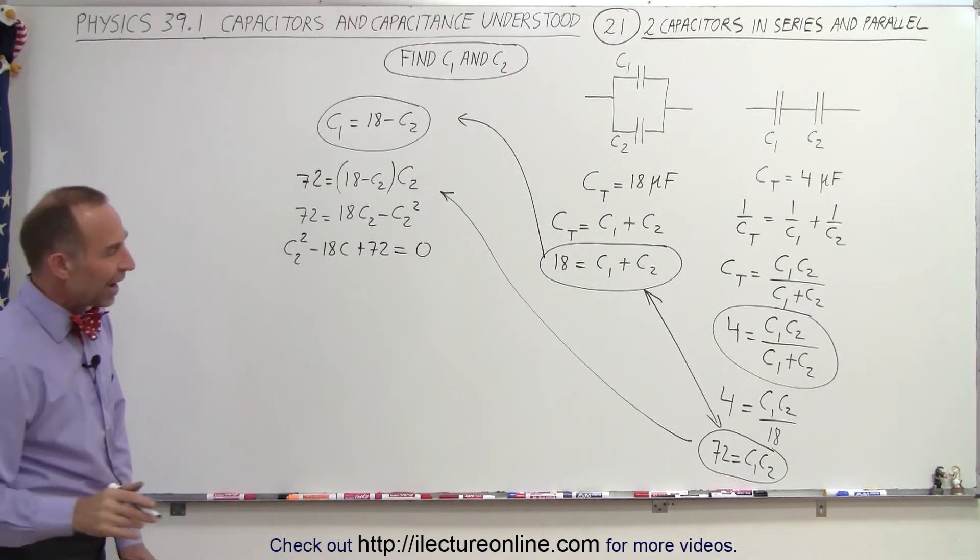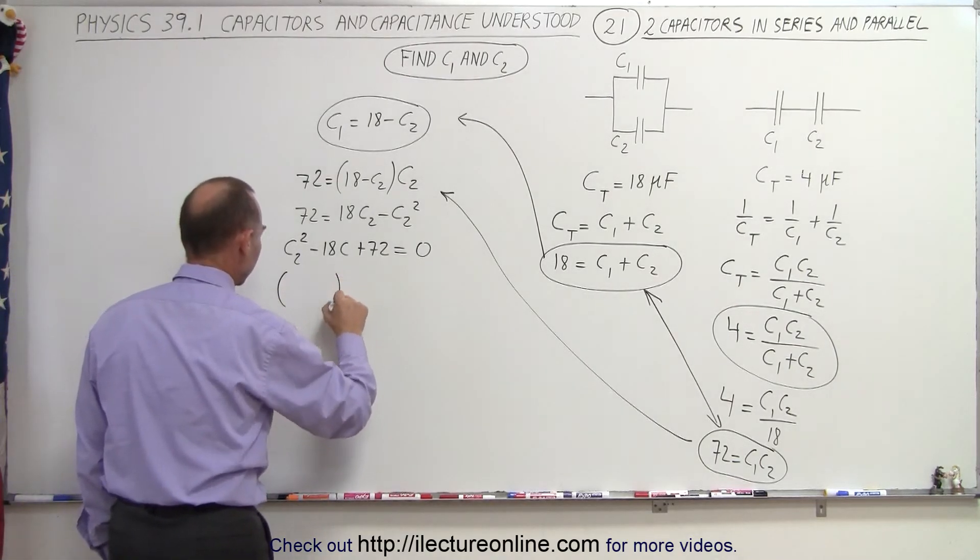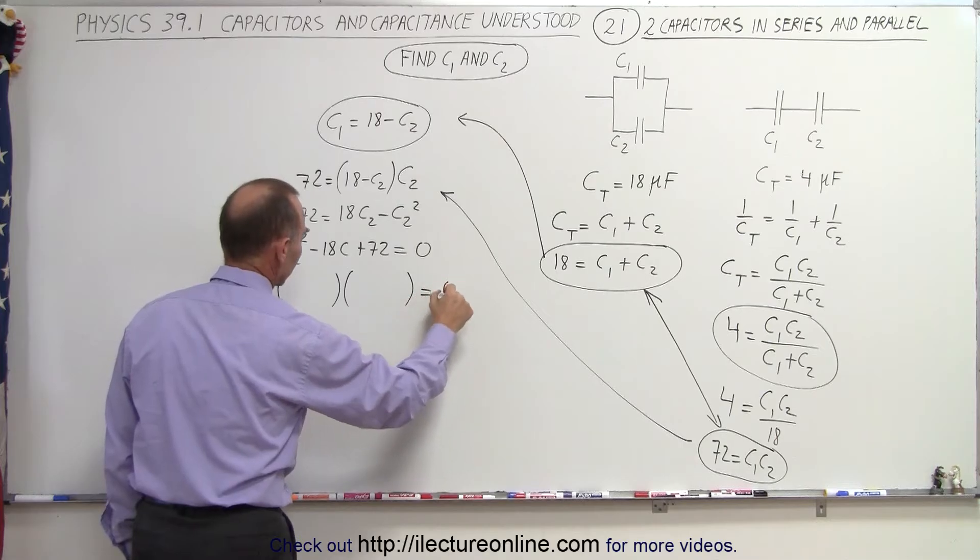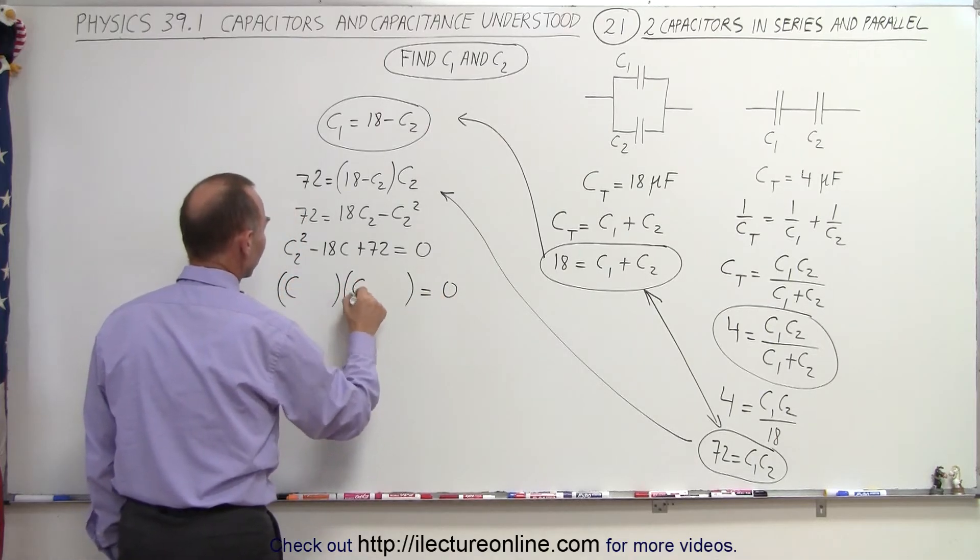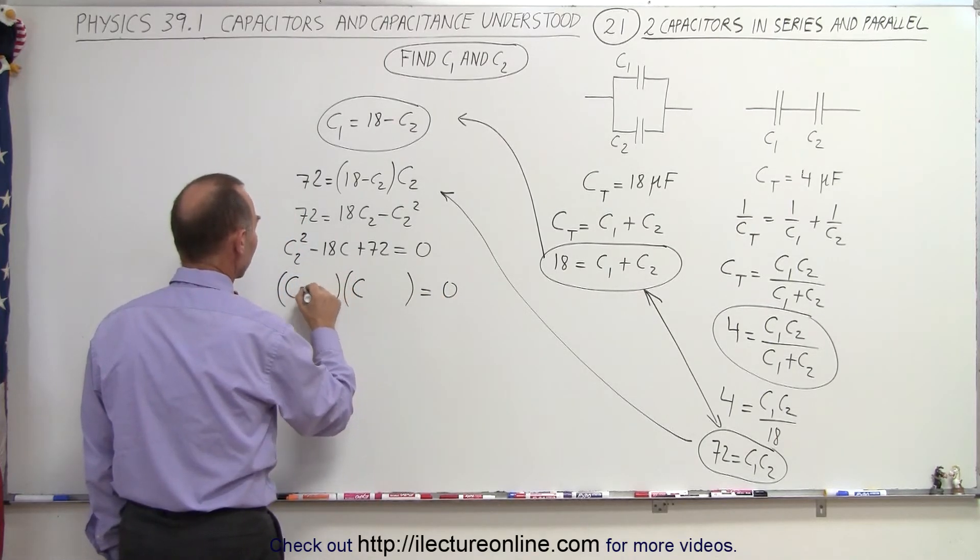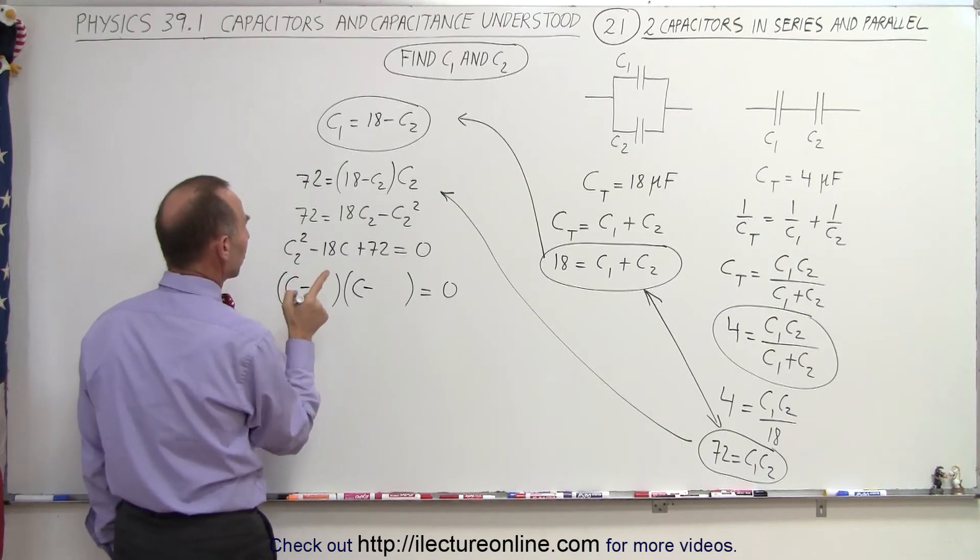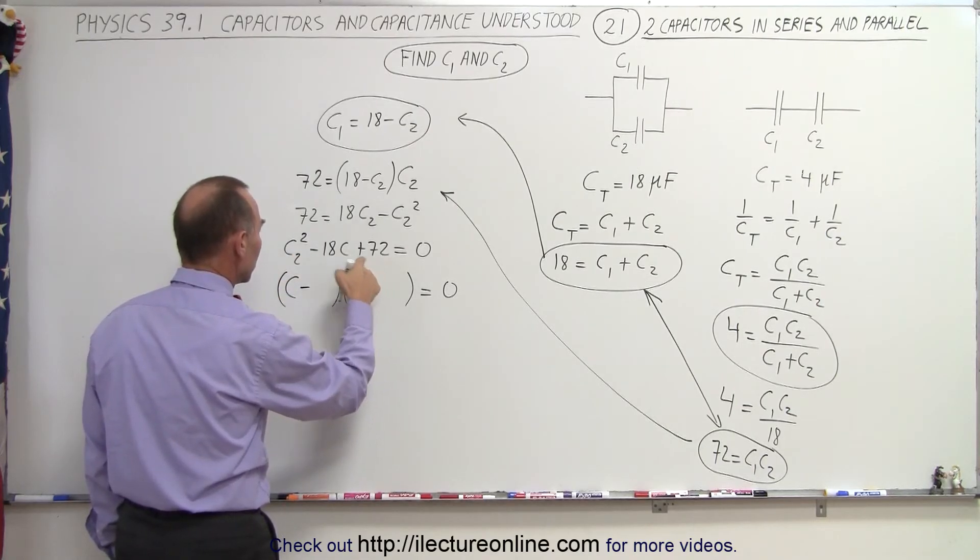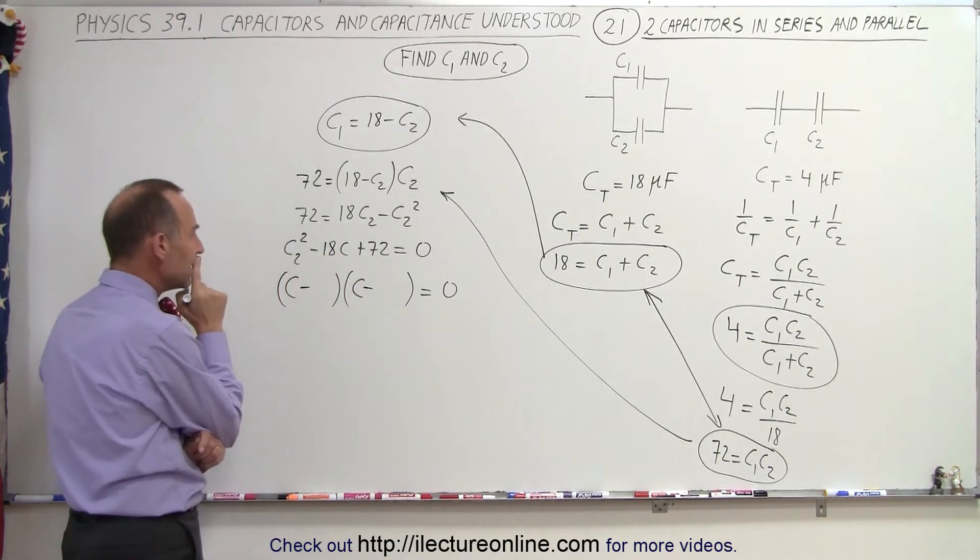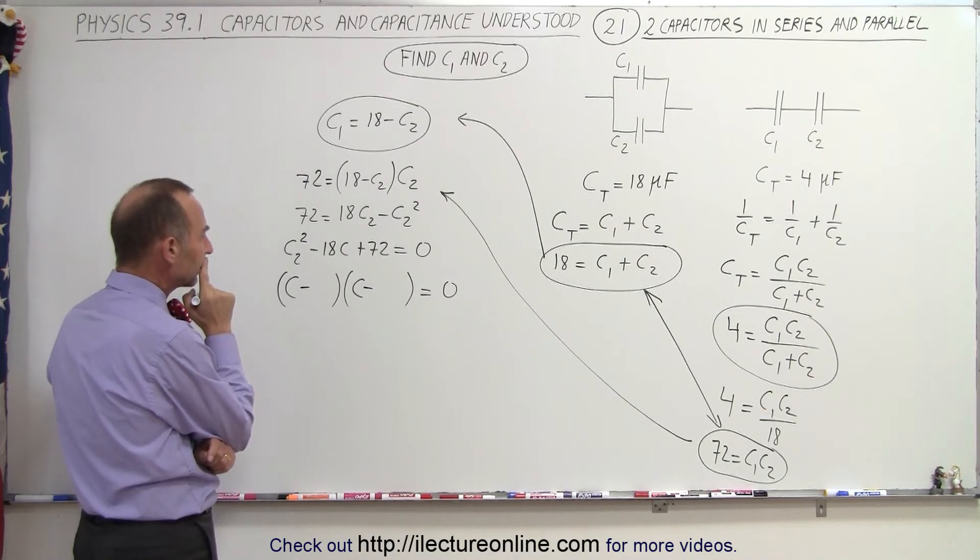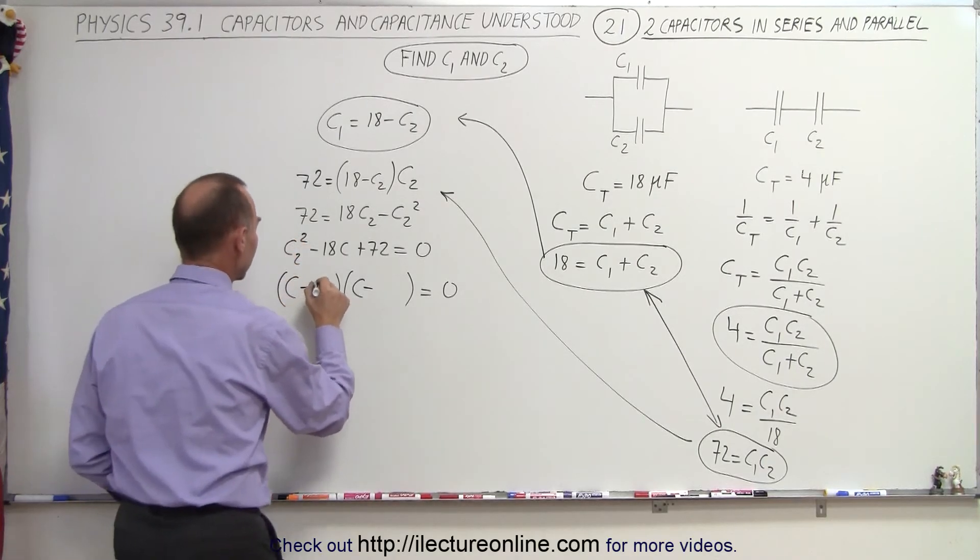And that looks like it's probably factorable. So let's try to factor that. So we have C and C, we need to have two negative signs, and two numbers when multiplied gives me 72, when add gives me 18. Six and eight looks like it might be it.